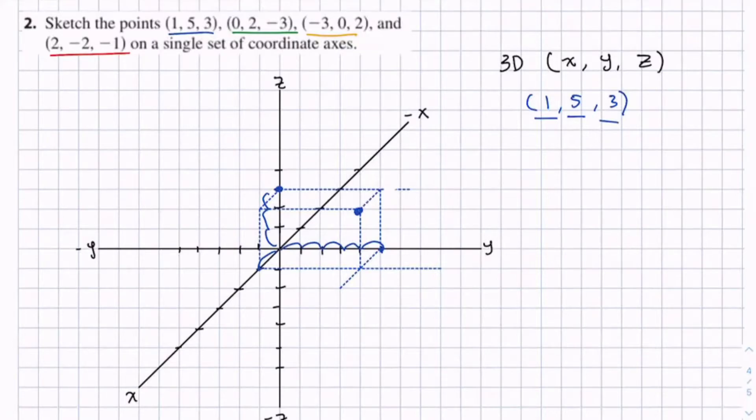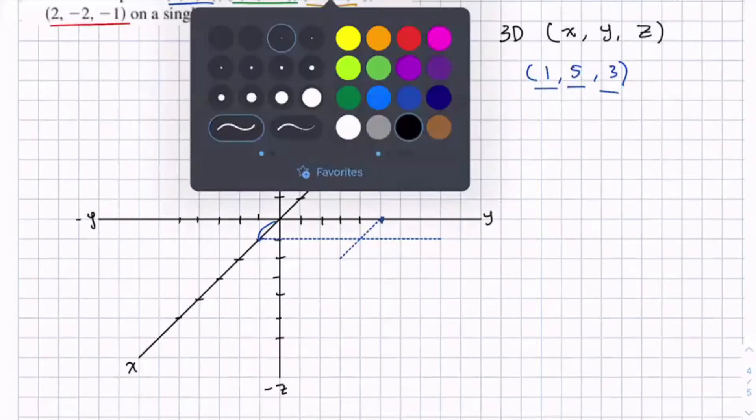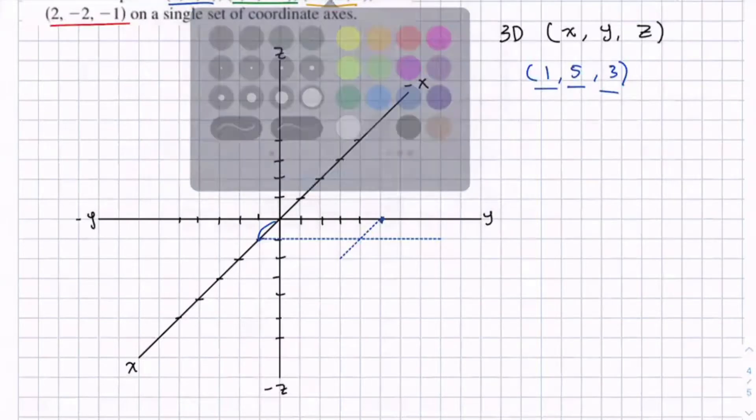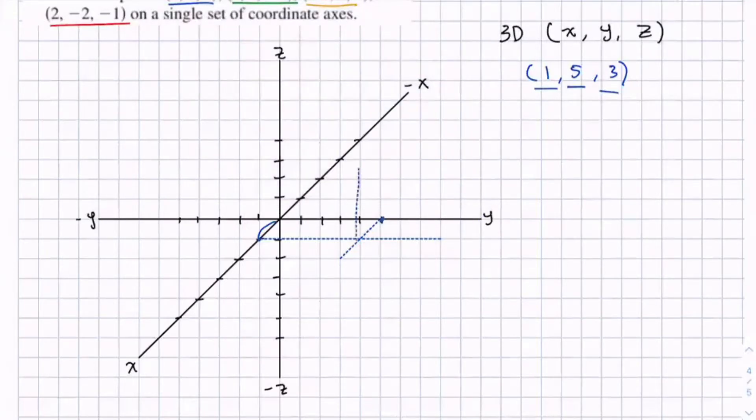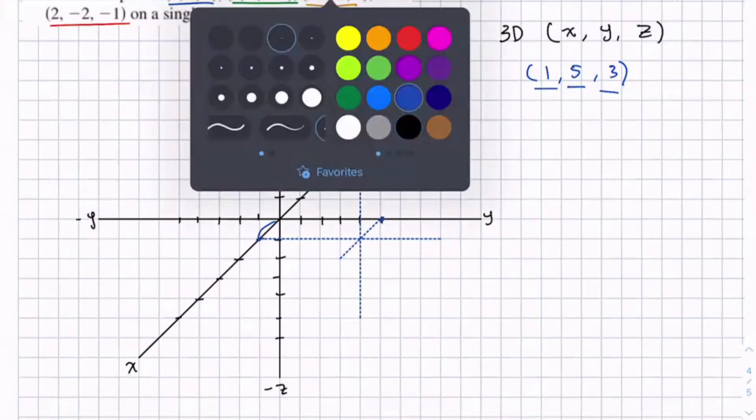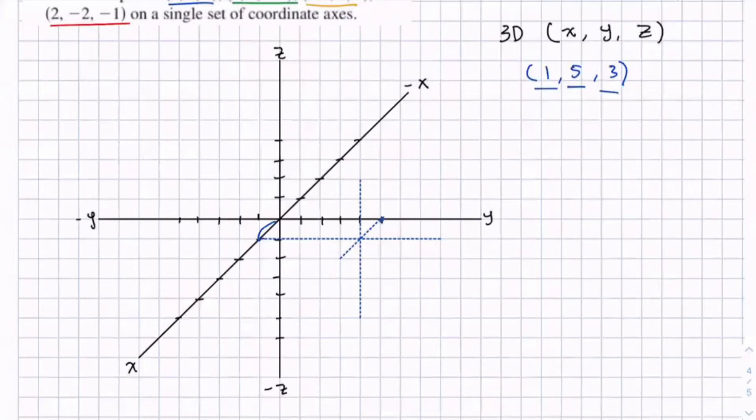So hopefully you can see this box that got formed. And the point that we would have is here. But there's a faster way of doing this. So instead of going up to the z, we stay in the x-y plane, and we just draw a straight line and go up 3 units from there. Because remember the z is 3. So 1, 2, 3. And here's our point. This will make more sense as we do more points.